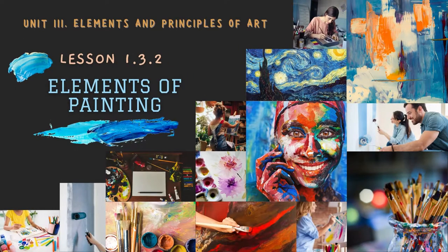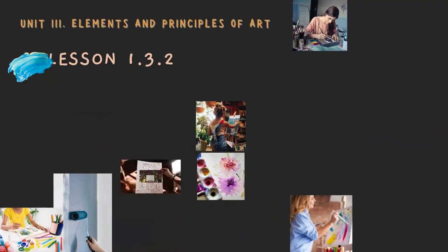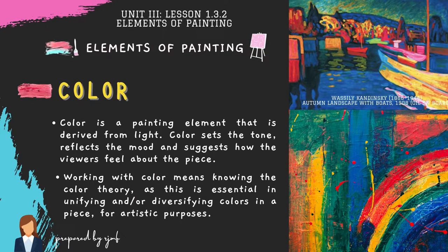We will now discuss the elements of painting. The first element is color. Color is a painting element that is derived from light. It sets the tone, reflects the mood, and suggests how viewers feel about the piece. Artists have endless possibilities in using color, and working with color means knowing color theory, which is essential in unifying or diversifying colors in a piece for artistic purposes.